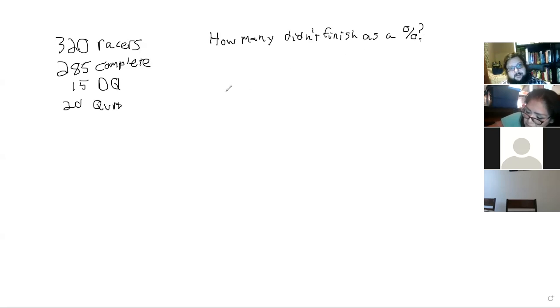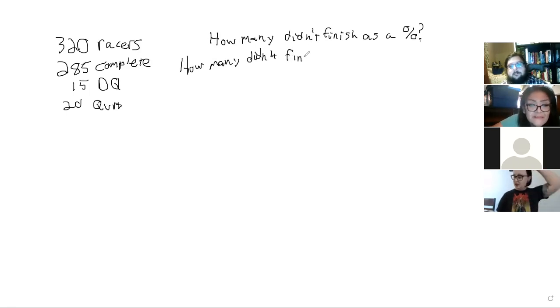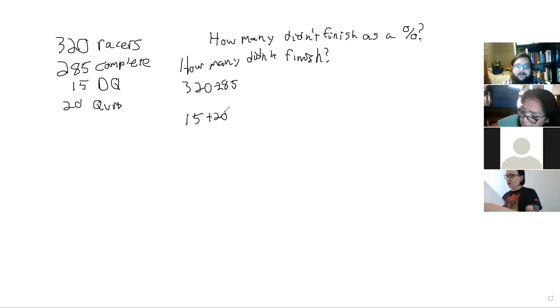The two easiest ways to do this: I can take how many didn't finish. There's 320 total, so I could subtract 320 minus 285, or I can add 15 and 20. I like smaller numbers when doing math, so I would do this one personally.